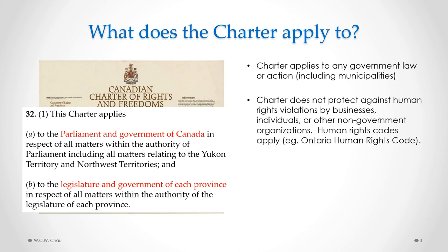What that section also tells us is what the Charter does not apply to. It does not apply to anything that is not government. It does not protect against human rights violations by businesses, individuals, or other non-government organizations. For example, if you apply for a job and you're not given that job on the basis of your race or religion, it's not the Charter that you would look to for protection. It would be a human rights code, and there are human rights codes under provincial legislation in every province, and there's also a Canada Human Rights Code.